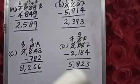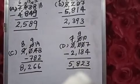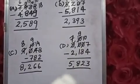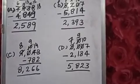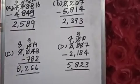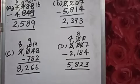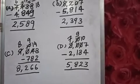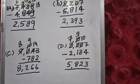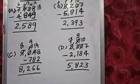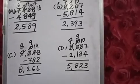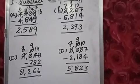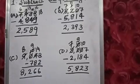So 10 minus 8 is 2, 9 minus 1 is 8, and 7 minus 2 is 5. Your answer is 5,823. I hope the first question is clear — it's simple subtraction.